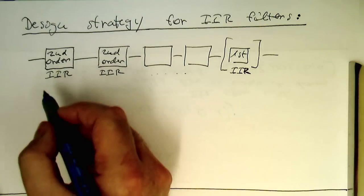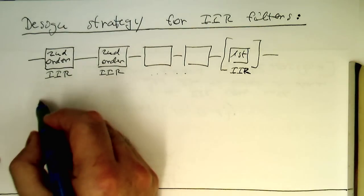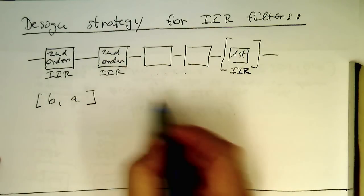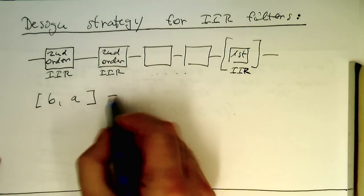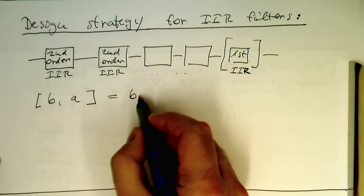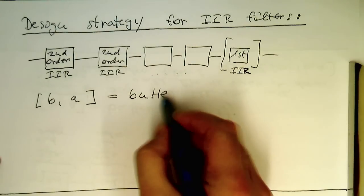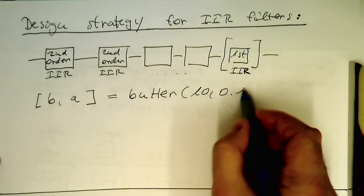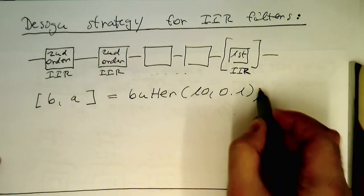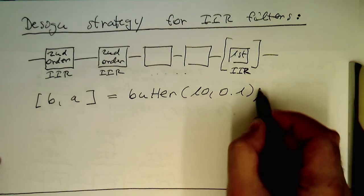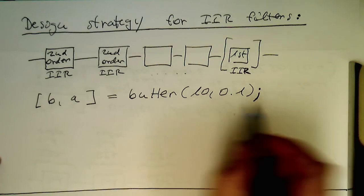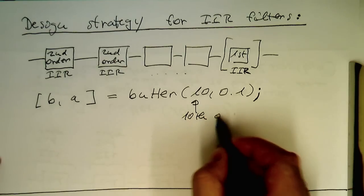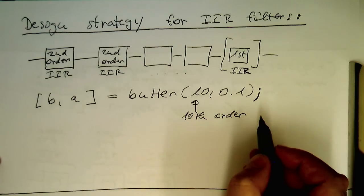So now, when we're looking at our filter commands here, b, a, we know these are our IIR coefficients. For example, we use a Butterworth command: butter 10, 0.1. This generates us a Butterworth filter here of 10th order.